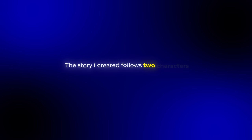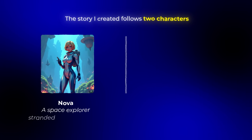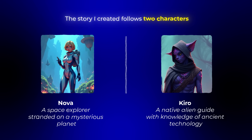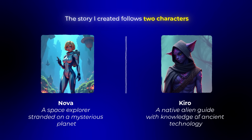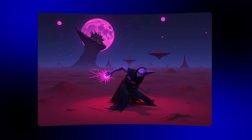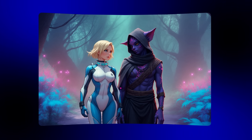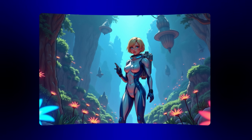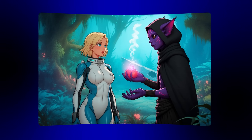The story I created follows two characters: Nova, a space explorer stranded on a mysterious planet, and Kiro, a native alien guide with knowledge of ancient technology. Throughout the comic, they journey across dangerous terrain to find a way to repair Nova's ship and get her back home. I'll show you exactly how I created consistent illustrations of these characters across multiple scenes, including different camera angles, various poses, and even interactions between them.